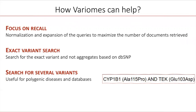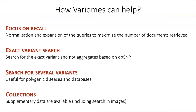Third, Variome is able to search for several variants in a single query, which is especially useful for polygenic diseases. And finally, Variome is not only searching in the abstract and full text, as is the case for most literature-based search engines, but it also searches in the supplementary material associated to publications, including searching in images.